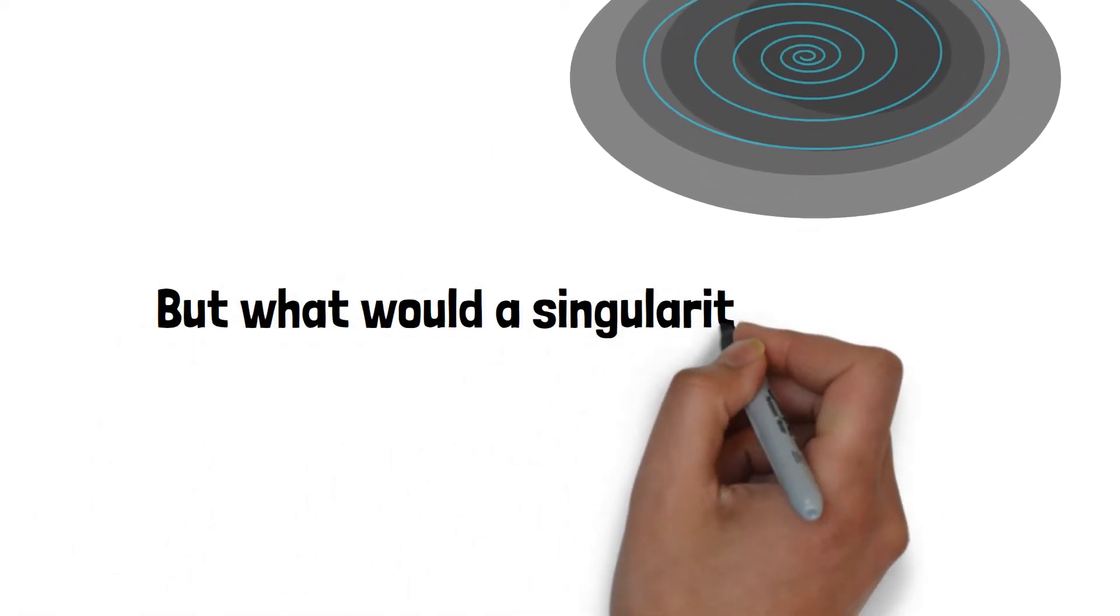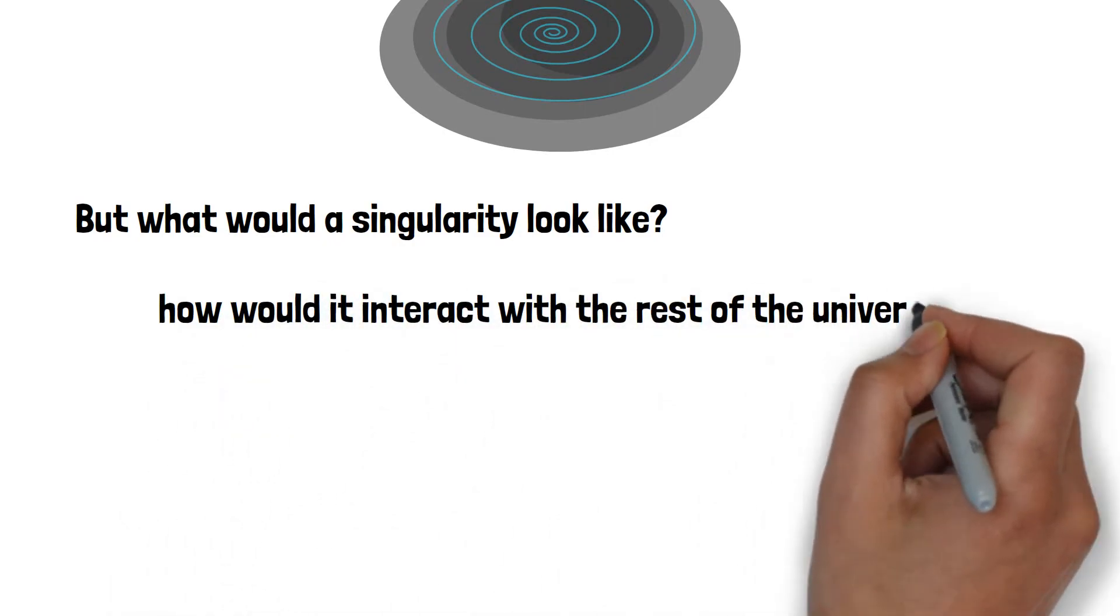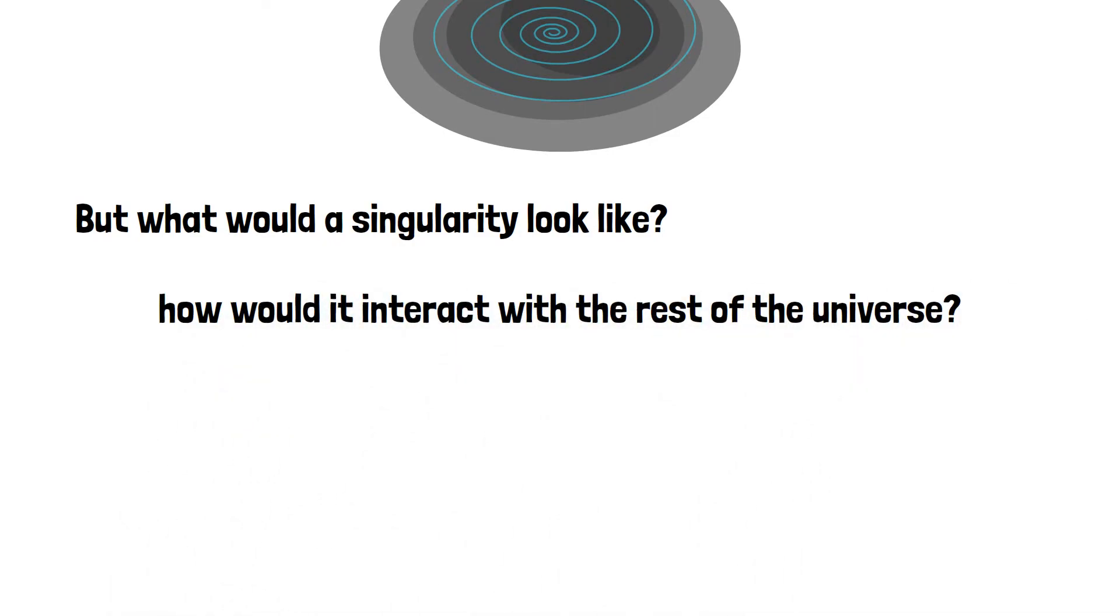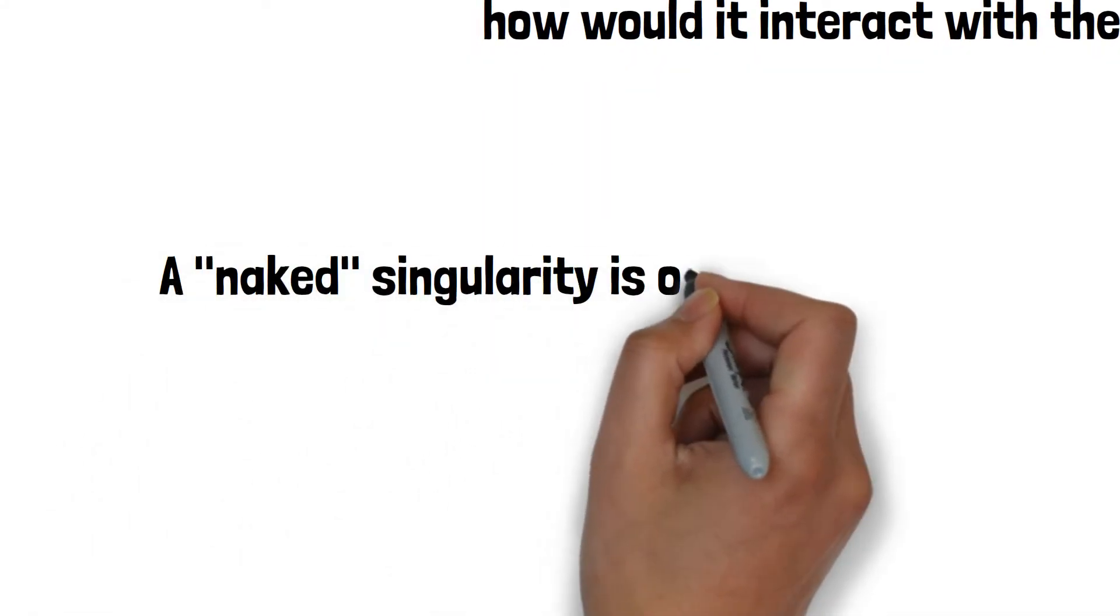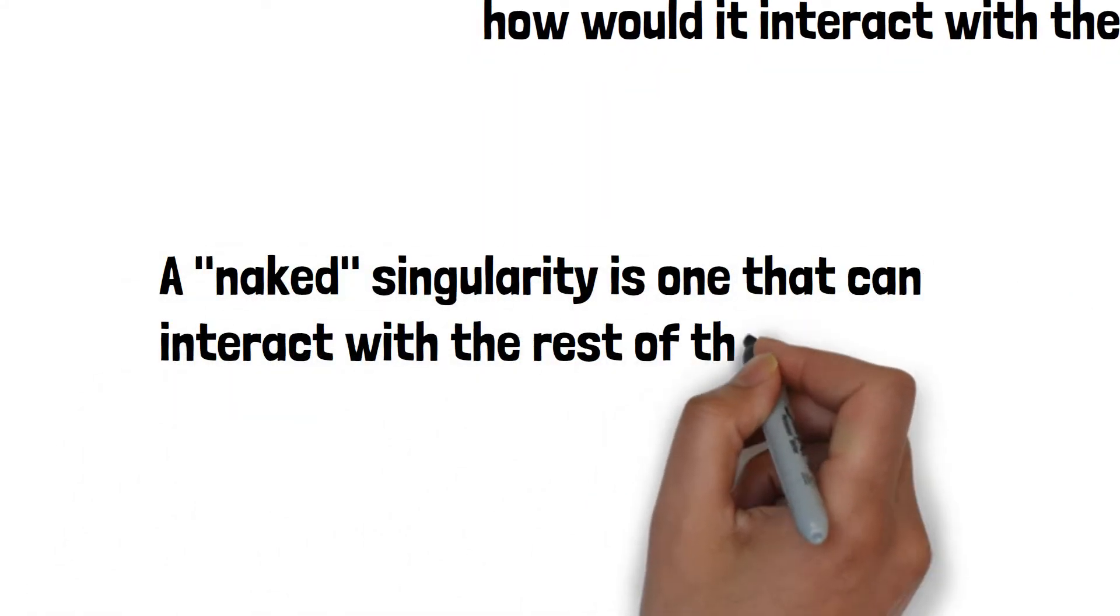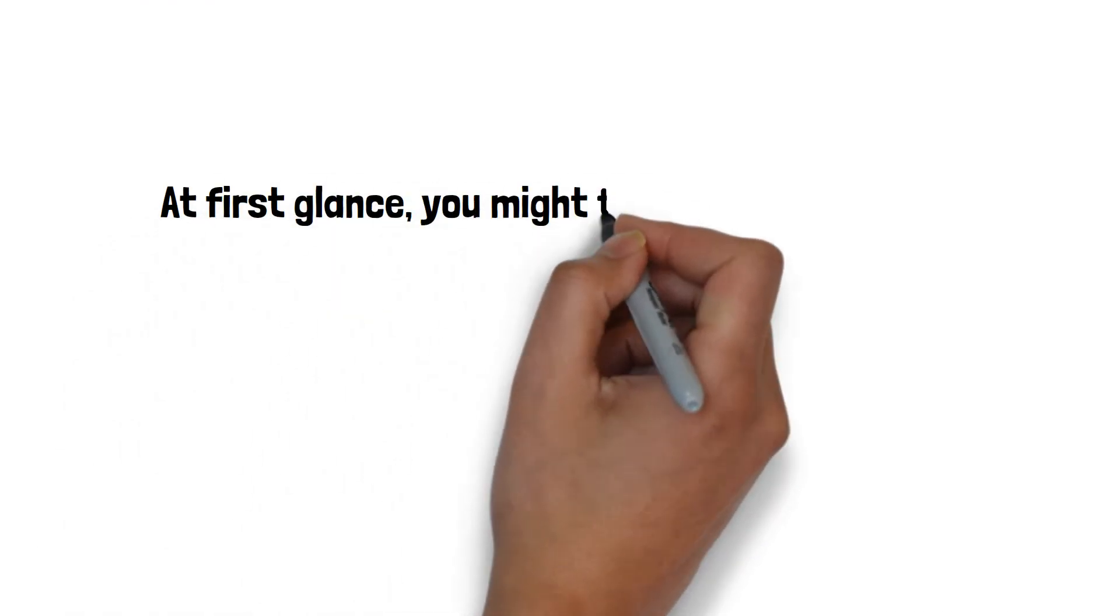But what would a singularity look like? And how would it interact with the rest of the universe? What does it mean to say that something has no real surface and is infinitely small? A naked singularity can interact with the rest of the universe. Black holes have event horizons—spherical regions from which nothing, not even light, can escape.